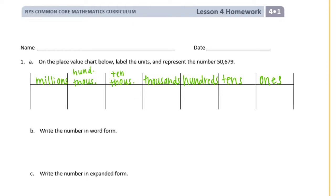And if we're going to put this in our place value chart, let's start with the ones place. So here in the ones place we have a 9. In the tens there's a 7. In the hundreds there's a 6. There's a 0 in the thousands and a 5 in the ten thousands. Nothing in the hundred thousands or millions place.